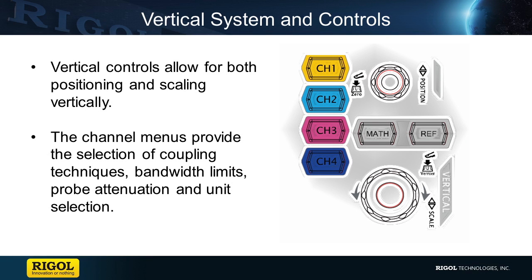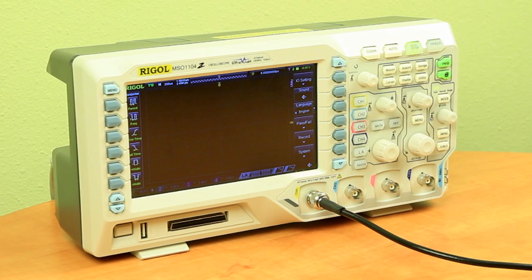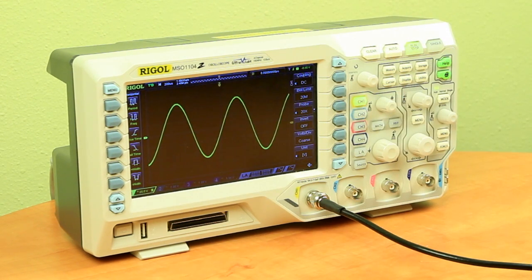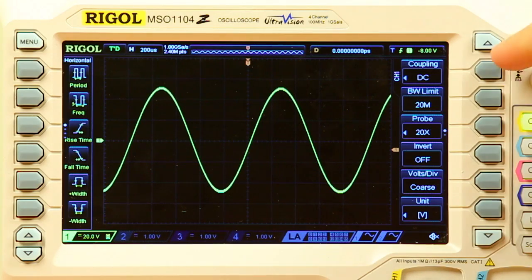Vertical systems and controls are some of the more basic controls and channel controls that allow us the ability to better view a captured signal and move the signal around on the screen. To go over some of the different vertical systems and controls available with this particular scope, I'm going to first turn on channel one, which is connected to a one kilohertz sine wave, and then go through the menu and over some of the knobs associated with it.